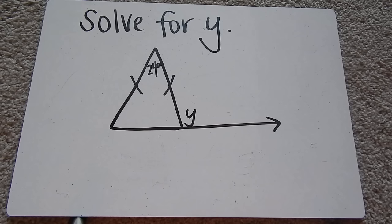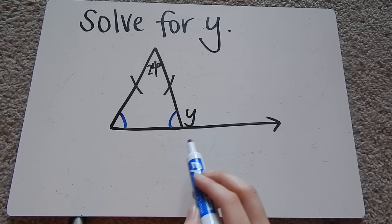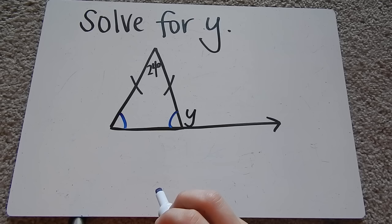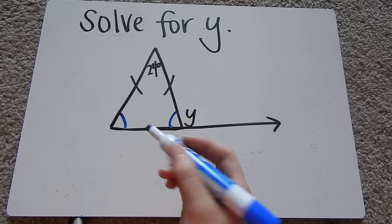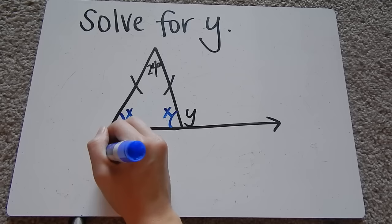Moving on to the next problem. This problem says solve for y. Again, I have two congruent sides, which means these bottom angles are going to be congruent. If I can figure out these bottom angles, then I can figure out this exterior angle by using our exterior angle theorem. So because I have two congruent angles, I'm going to call them x. They're both equal to x.